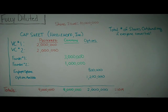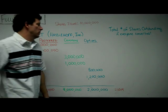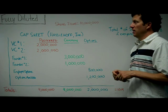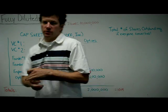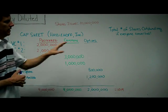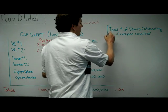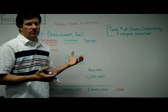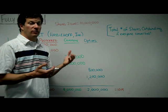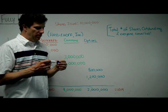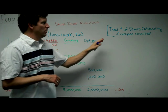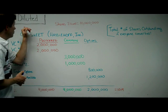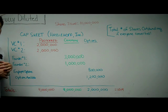We're going to talk about the concept of fully diluted shares outstanding. This is a term often used when describing the ownership percentages or the cap table of a company. Fully diluted shares outstanding essentially means the total number of shares outstanding if everyone who had the option to convert to shares did so — including option holders and convertible bond holders. It essentially asks: if everybody who had an opportunity to convert did, how many shares would be outstanding?